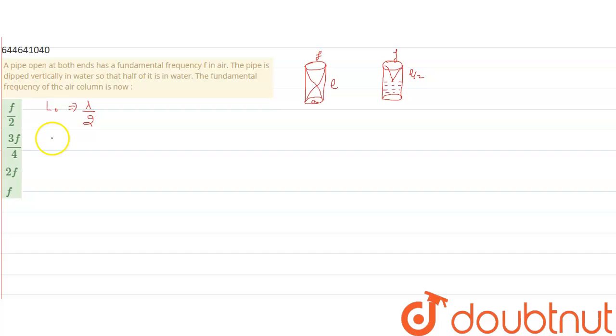And length in closed pipe will be lambda by 4. So from here we have frequency F equal to V upon lambda. So here lambda is given.